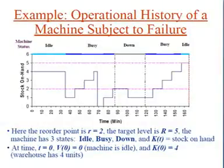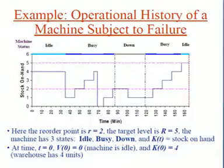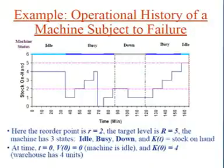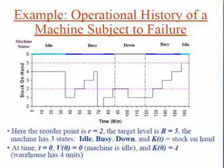During the next 30 minutes, no further demand arrives and the inventory level climbs gradually as finished products arrive from the machine, reaching a level of 4 at time 65. At time 69, another customer places a demand equal to or larger than the stock on hand, resulting in depletion of the entire inventory — this demand goes unsatisfied and unfilled, since we only had 4 units and the customer may have been asking for 6, 7, or 8.